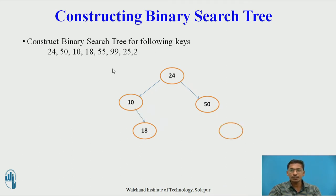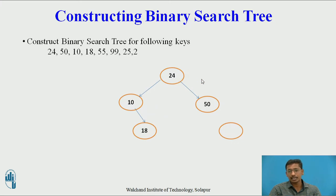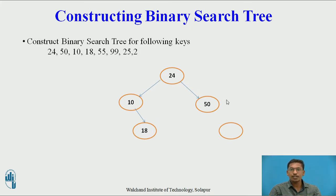Next node is 55. Starting from root: 55 is greater than 24, so 55 should be on the right subtree. We compare 55 with 50 — 55 is greater than 50, so 55 should be present on the right subtree of 50.